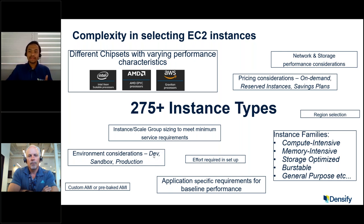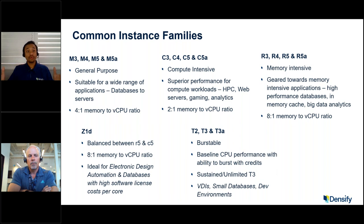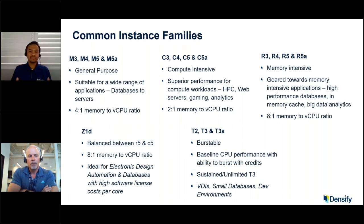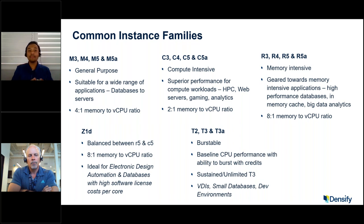Now, to break this down, I've picked the most common instance families we come across from our customers. The general purpose instance families — M3, M4, M5, and M5A (the AMD equivalent) — are mostly general purpose, suitable for a wide range of applications including databases and web servers. They have a 4-to-1 memory-to-vCPU ratio. Very common to use them. If you don't know which one to use, typically customers use the M series.